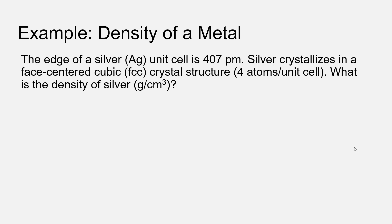In our last example, we looked at how to calculate the atomic radius for a specific metal, silver, based on the dimensions of a crystal cell. Knowing the structure of a face-centered cubic crystal's unit cell, we were able to take the edge length and relate it directly to the atomic radius. That's a pretty straightforward geometric relationship.